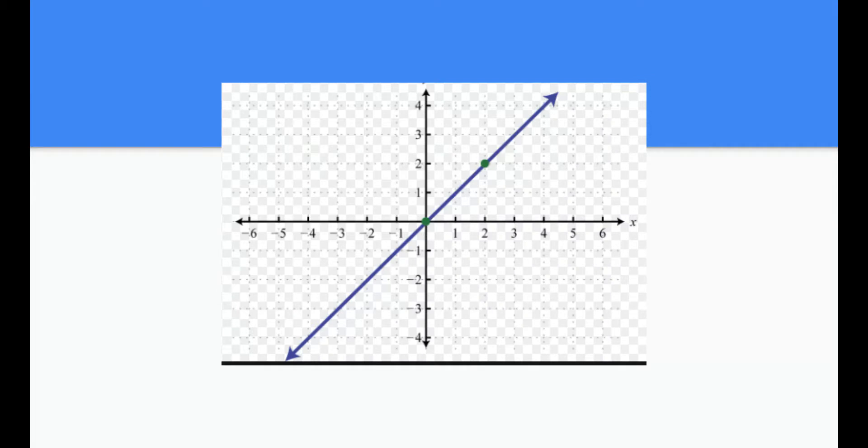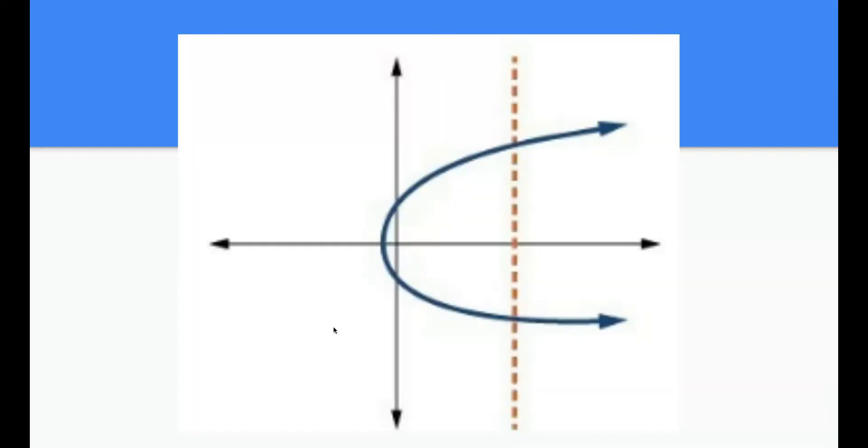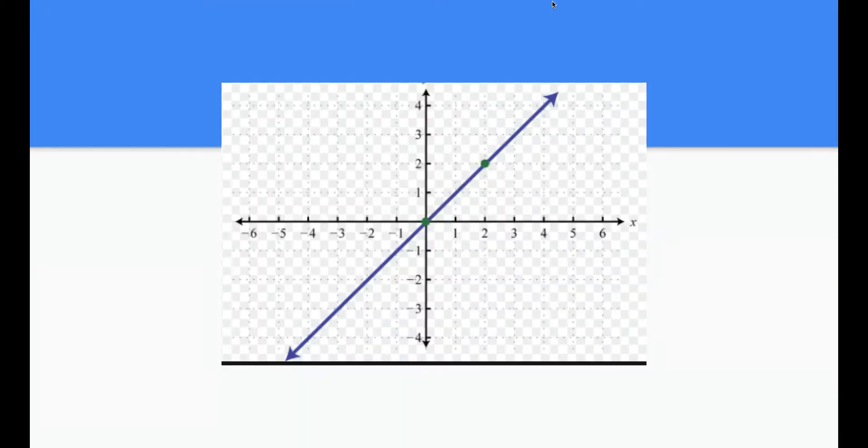We also have graphs, and I think graphs are easier because all you're looking at is to see can you connect anywhere vertically, meaning up and down. Anytime you see a diagonal line, you know that whether it's going up or down, a diagonal line is going to be a function. It's actually called a linear function.